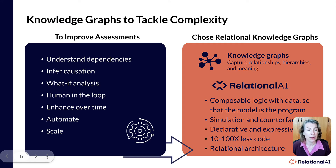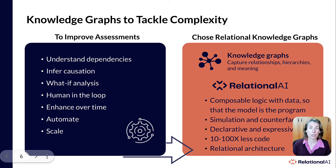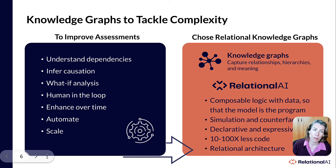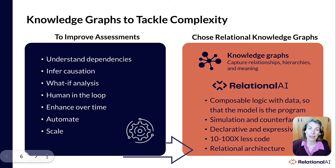With these challenges in mind, the UN Habitat looked to knowledge graphs to tackle that complexity. To improve assessments, they knew they had to understand dependencies better, be able to do what-if analysis, automate while keeping humans in the loop, and scale and enhance the system over time. So they chose a relational knowledge graph.